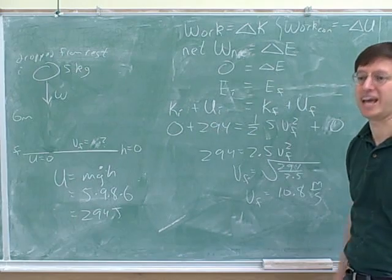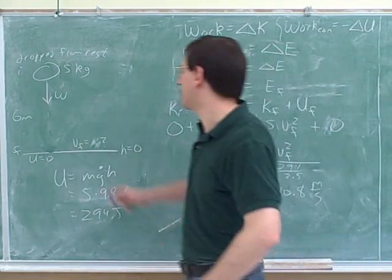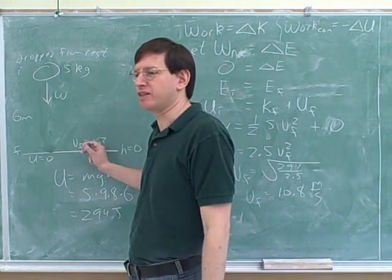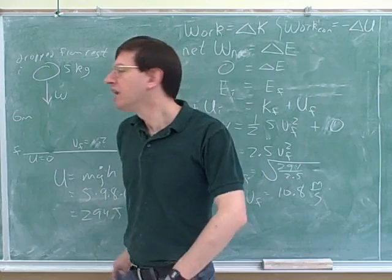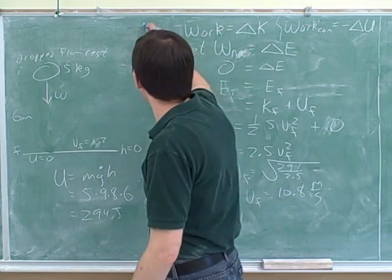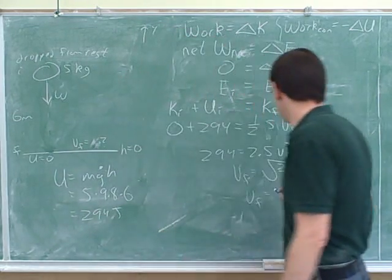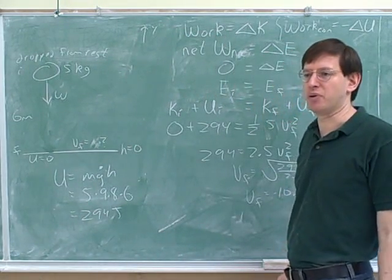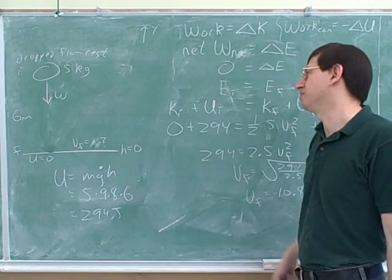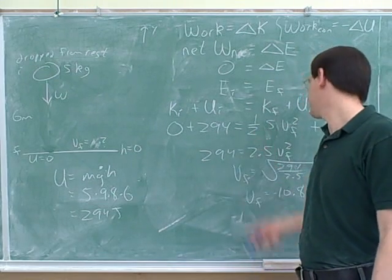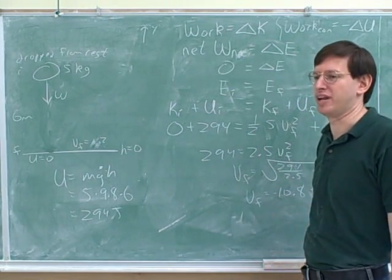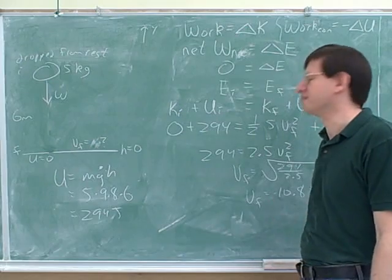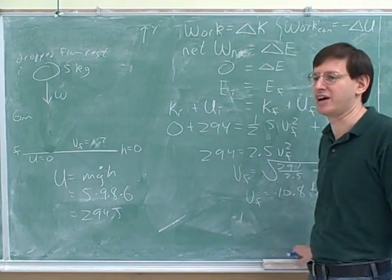Down. Yeah, down. From our common sense, we know that the instant before we hit the ground, we're moving down. If we choose up as our positive direction, we could also say that the velocity was negative 10.8. But if we chose down as the positive direction, the velocity would be positive 10.8. So the simplest thing is to say it's 10.8 meters per second down.